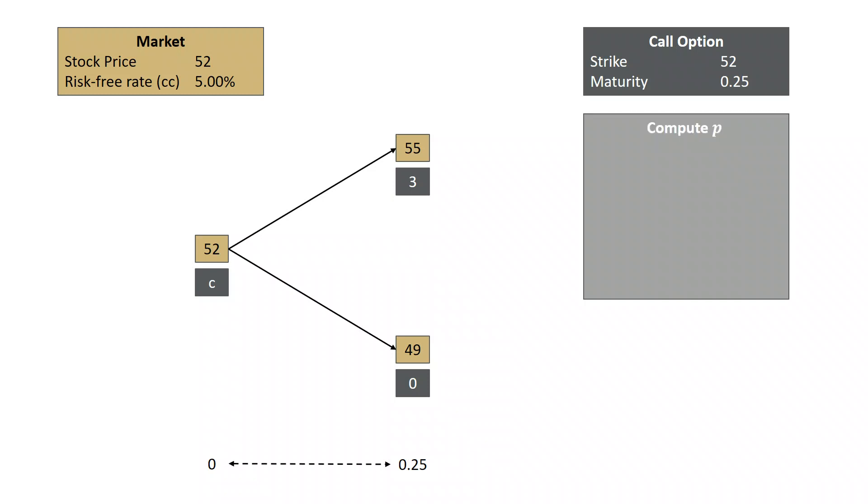First, we need to calculate our risk-neutral probability, P. The formula for P is E to the RT minus D, all divided by U minus D. So we need to calculate U and D.